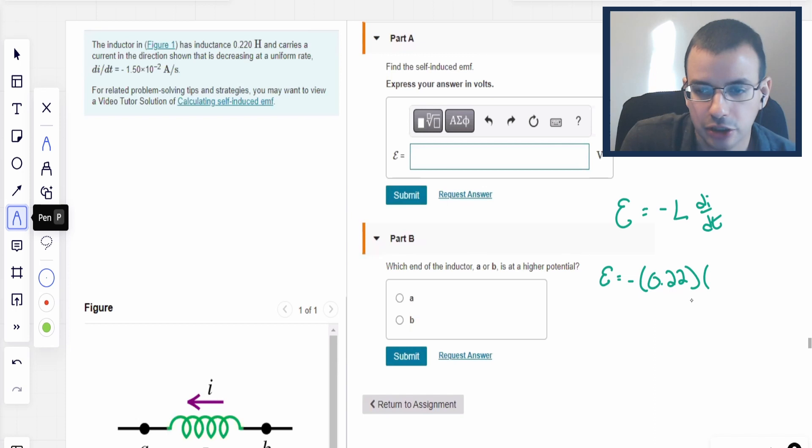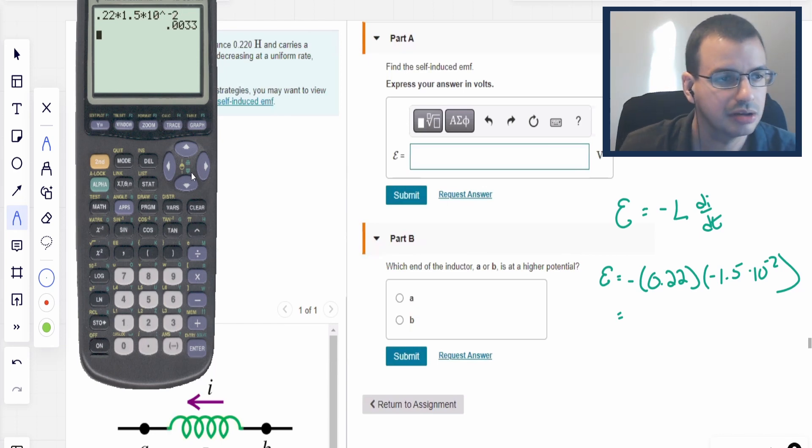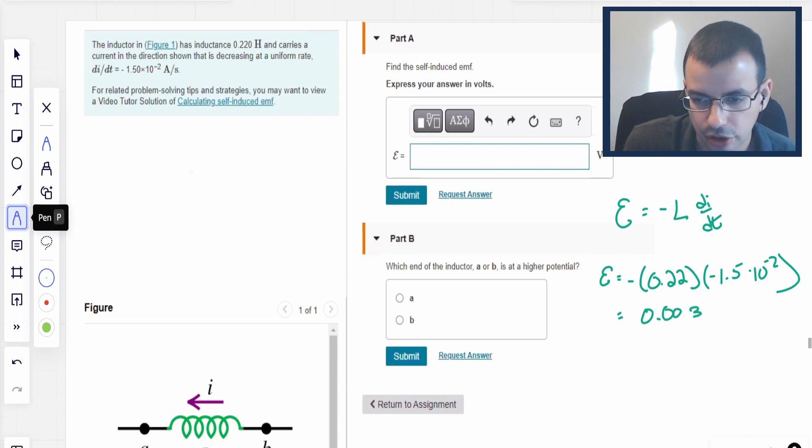times di/dt which is negative 1.5 times 10 to the negative second. If I was a better person I could do this in my head, I am not, so I'll do 0.22 times 1.5 times 10 to the negative second. It's a small number, this is reasonable. 0.0033. Let's take a look at this real quick, 0.033, yep this seems reasonable.